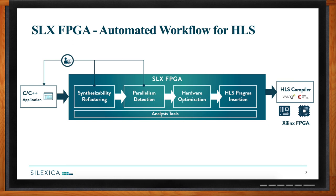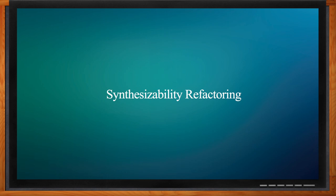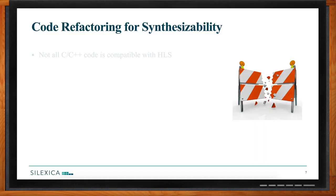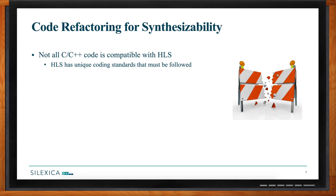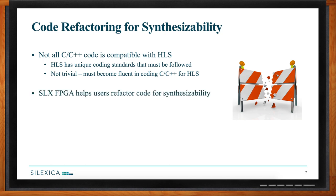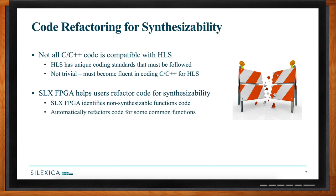Not all C and C++ code is compatible with HLS — some constructs simply don't exist in hardware or need to be ironed out first. A simple example is malloc: we can't do dynamic memory allocation in hardware because everything is wired up. Unbounded arrays are another issue since there's no unlimited memory set. SLX FPGA helps users refactor that code — some automatically, and others through a guided flow.